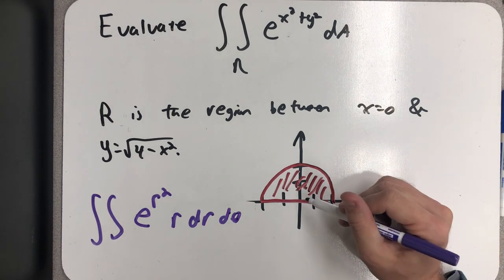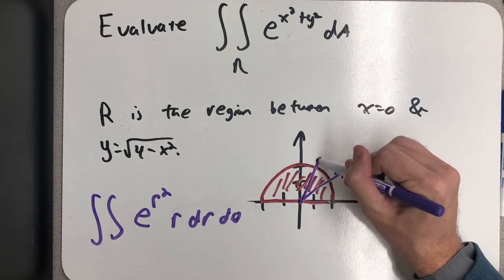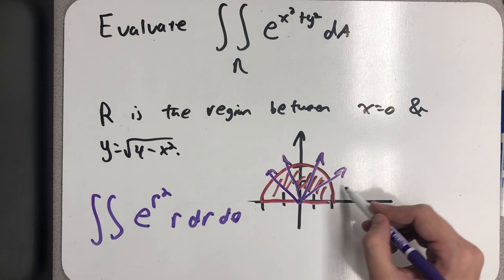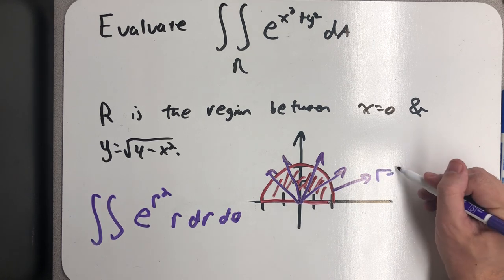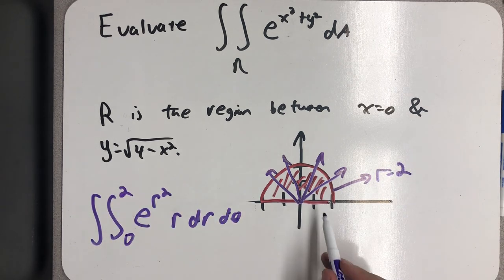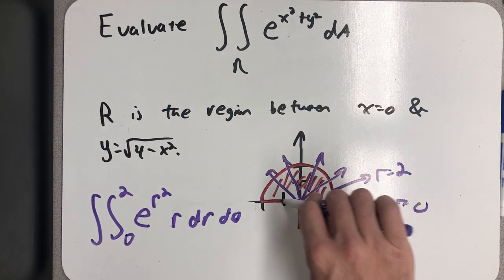I start in the region at R equals 0, and then I'm always leaving on that ray increasing from the origin through the circle. Well, the polar equation of a circle of radius 2 centered at the origin is R equals 2. So 0 to 2. And then I start at angle 0, and I rotate until I get to angle pi.